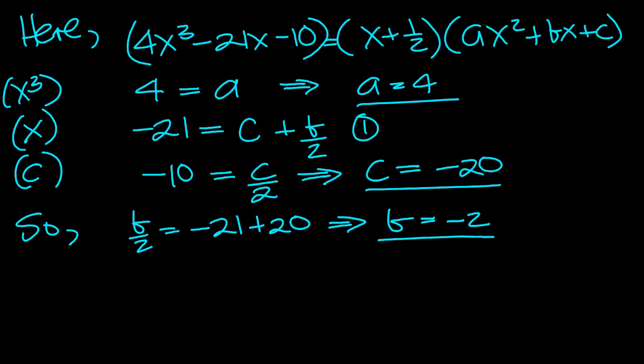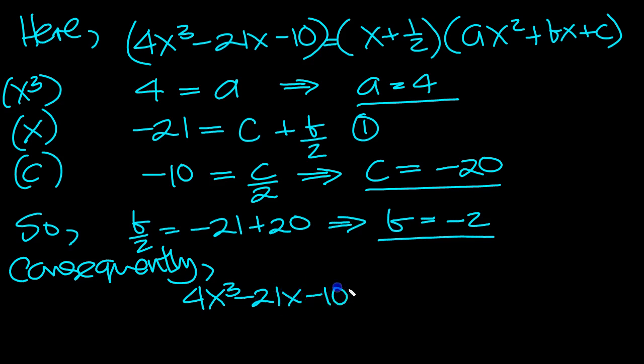So we've got our cubic then. Consequently, we can now write down this cubic is 4x cubed minus 21x minus 10 is equal to x plus a half, times a, which is 4x squared minus 2x minus 20.